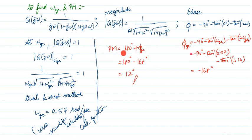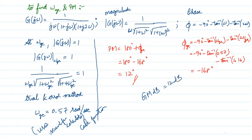Now, the phase margin is 180° + φ_gc. Substituting ω_gc into the phase angle expression, we get φ_gc = minus 168°. So the phase margin is 180° - 168° = 12°. The gain margin is 3.5 dB and the phase margin is 12°. Both are positive, so the system is stable.